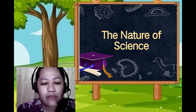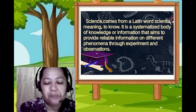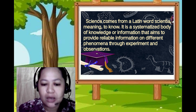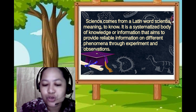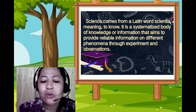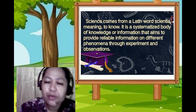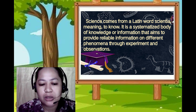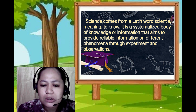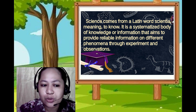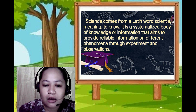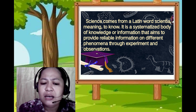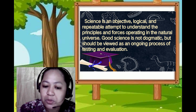Firstly, science comes from a Latin word 'scientia' meaning 'to know.' It is a synthesized body of knowledge or information that aims to provide reliable information on different phenomena through experiment and observation. In science, we will be discussing what information or knowledge we can actually get when we do science, and we can do it through experiment and observation.